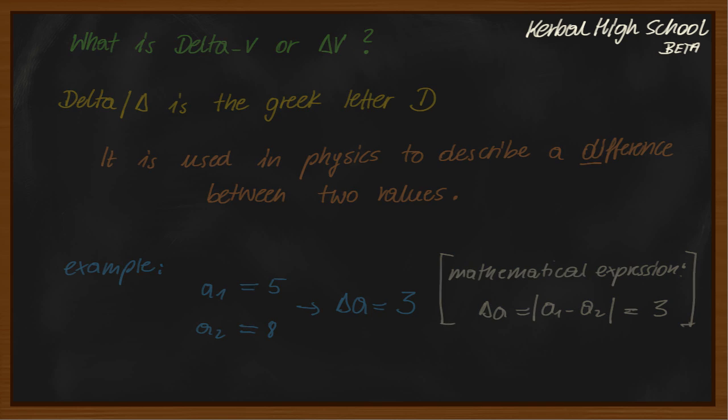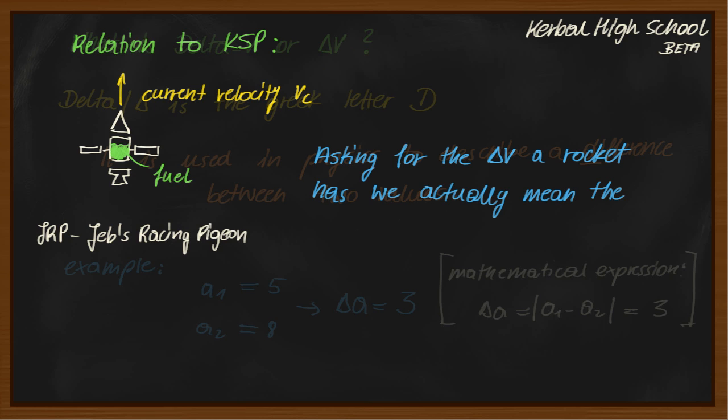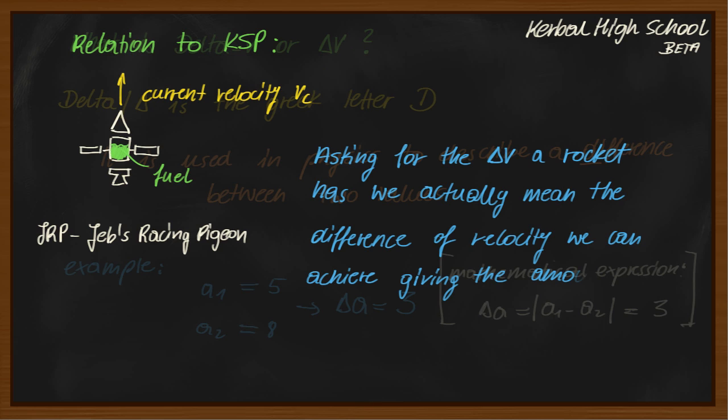So, what is the relation to KSP? Now, look here. This awesome spacecraft. It has a certain amount of fuel and a current velocity vc. Asking for the delta v a rocket has, we actually mean the difference of velocity we can achieve given the amount of fuel we currently have.